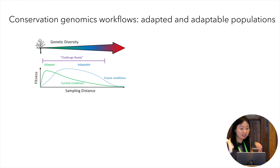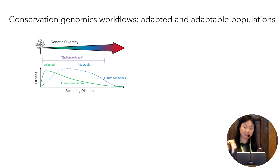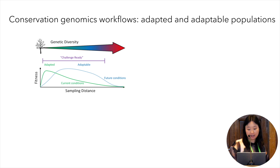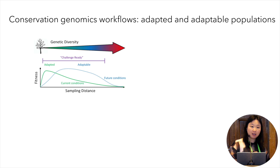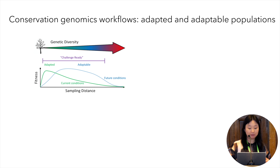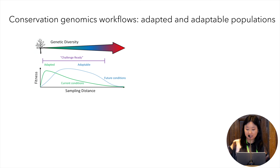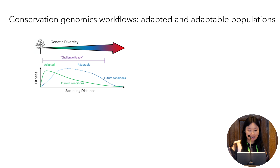Genetic diversity plays an important role in the survival and adaptability of species and populations and is recognised as a key component of biodiversity. It enables a species to respond and adapt to change or a challenge. Therefore, genetic information can allow us to optimise conservation populations to be adapted and adaptable.